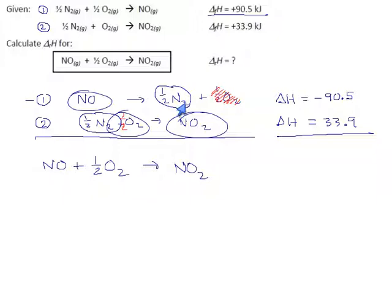And the delta H, when you add two reactions together, you add their delta H's together. So we get, let's see, minus 90.5 plus 33.9. Delta H should be minus 56.6 kilojoules.